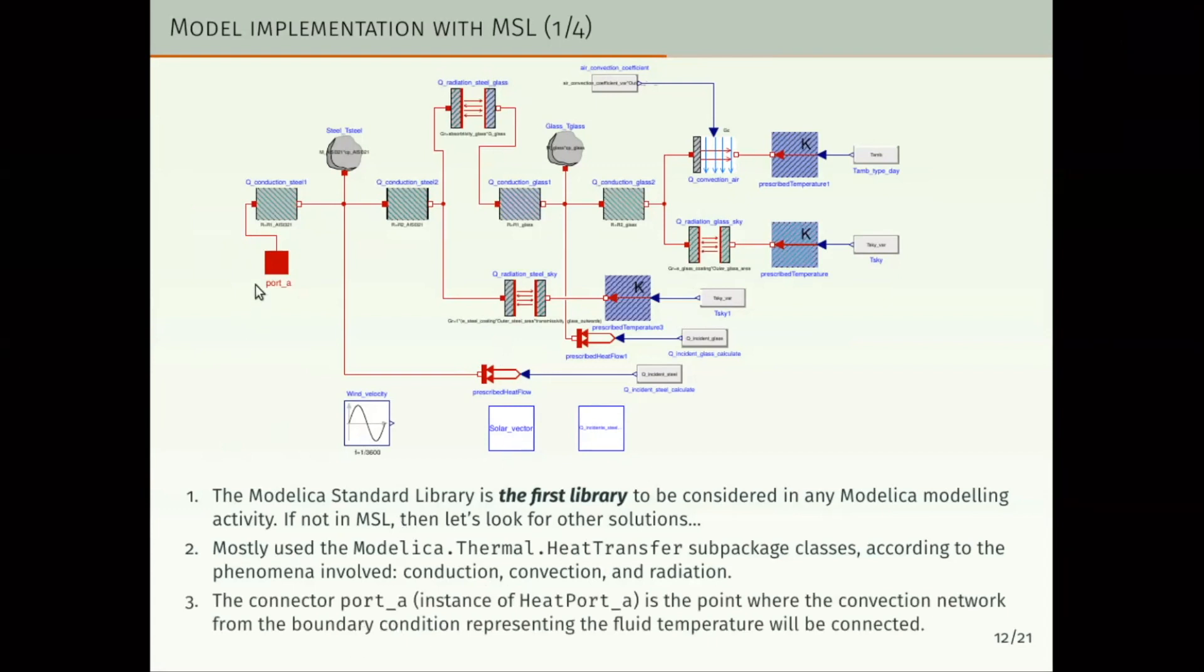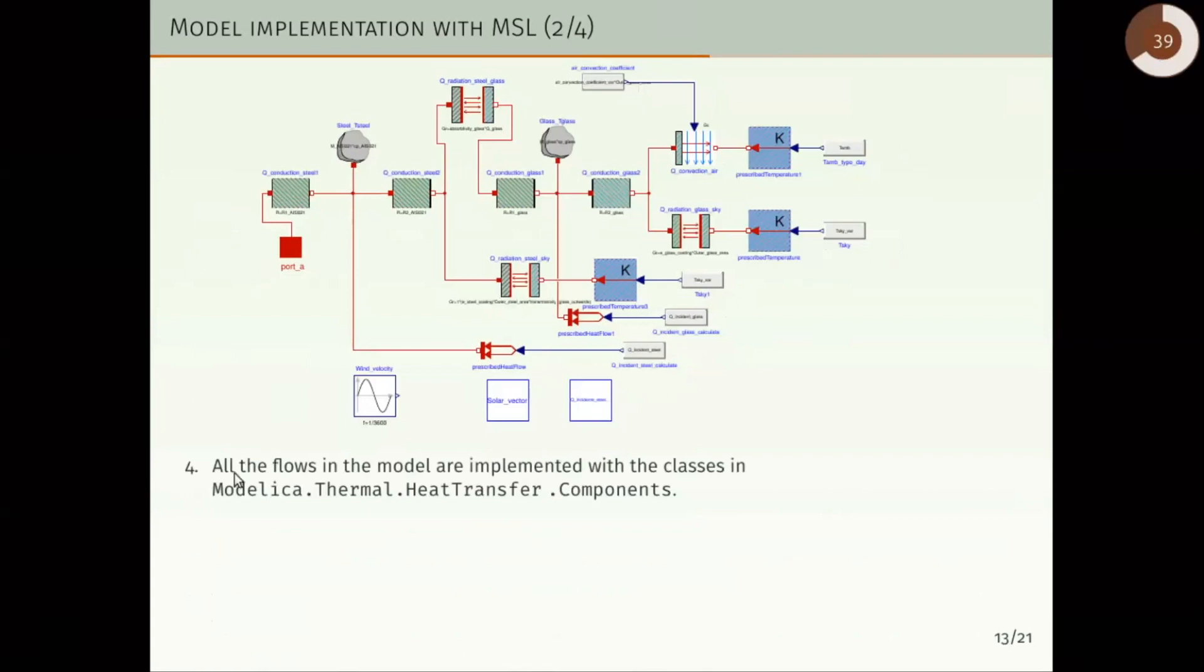The connector port A, that is an instance of the class heat port A, is the point where the convection network that is connected here from the boundary condition representing the fluid temperature will be connected. All the flows in the model are implemented with classes from the Modelica Thermal Heat Transfer components, all of them. And the energy conservation in the glass envelope and in the metal pipe masses is modeled in the class heat capacitor. Here we have an instance corresponding to the steel pipe, and here we have the other that corresponds to the envelope glass.